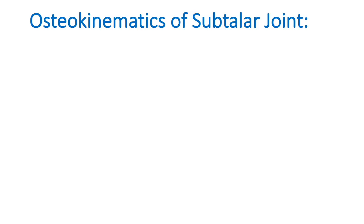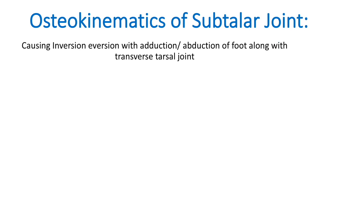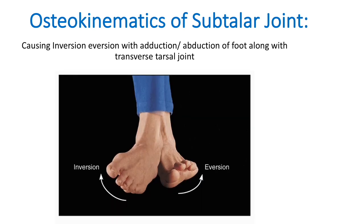Moving on to osteokinematics of the subtalar joint. The movement occurring at the subtalar joint is primarily eversion and inversion, but inversion and eversion occur along with adduction and abduction of the foot. This movement occurs in the coronal plane and sagittal axis. The range of motion is about 23 degrees of inversion and 12 degrees of eversion.